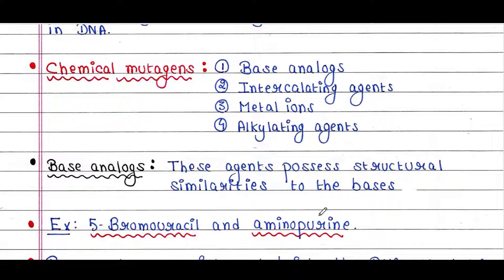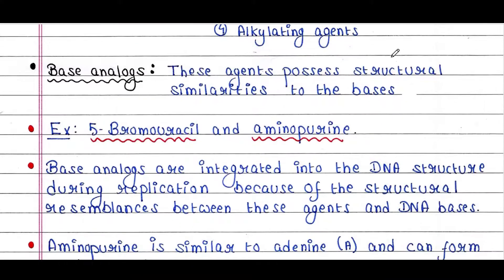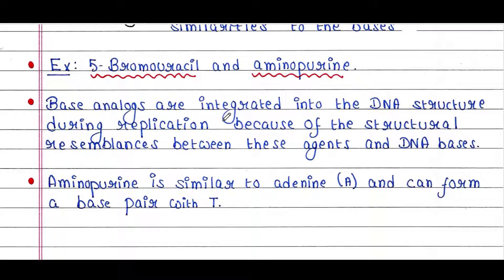Base analogs are agents that possess structural similarities to DNA bases. Examples include 5-bromouracil and aminopurine. They are integrated into the DNA structure during replication due to their structural resemblance to DNA bases. Aminopurine is similar to adenine and can form a base pair with thymine (T).